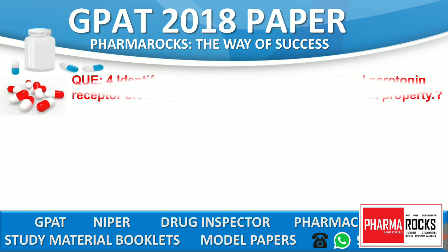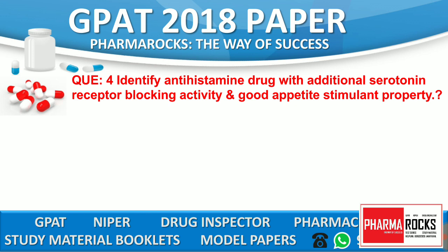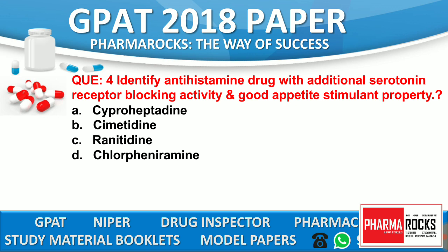Question number 4: Identify the antihistamine drug with additional serotonin receptor blocking activity and good appetite stimulant property. The correct answer is option A — Cyproheptadine. Cyproheptadine has the activity of additional serotonin receptor blocking and good appetite stimulant property.